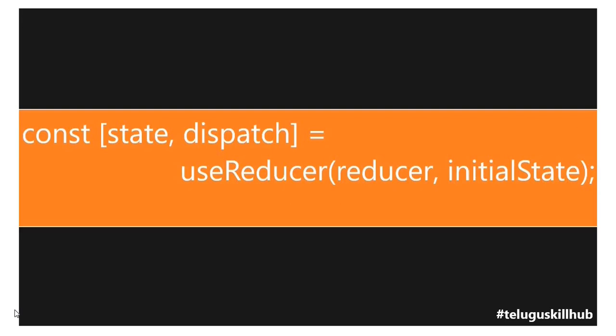The initial state value is the default state value we declare. On the left-hand side, we define state and dispatch. The dispatch is actually the action that we trigger to make changes in the state variable based on the reducer.